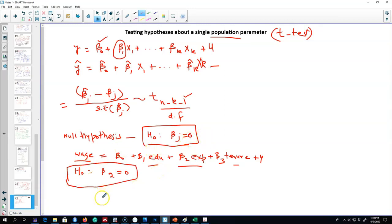To find that evidence, we use a t-test. Because we hypothesize that beta j is zero, that is, in the population, experience has no effect on wages. If this is zero, we will be left with beta j hat, our estimated coefficient, over the standard error of that beta j. This is our formula for testing this hypothesis.